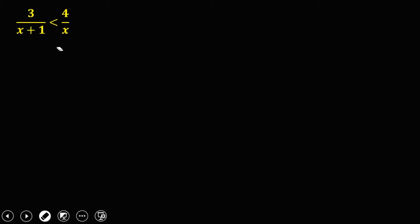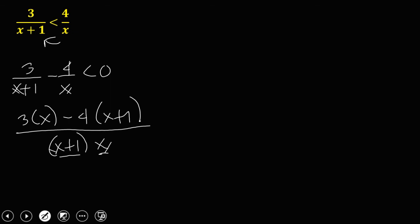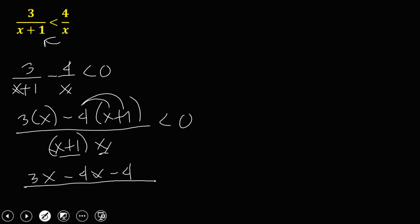Let's have this last example. First, write the equation in general form. Transpose 4 over x to the left side: 3 over x plus 1, minus 4 over x, less than 0. Simplify — the LCD is the product of the two denominators, x plus 1 times x. Bring down the first numerator: 3 times x, cancel x plus 1. Then minus 4 times x plus 1, cancel x. Less than 0. Simplifying gives 3x minus 4x minus 4, over x plus 1 times x, less than 0.